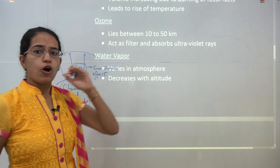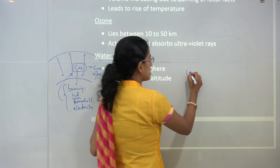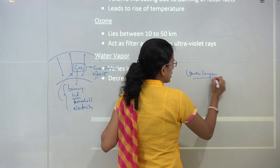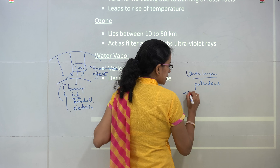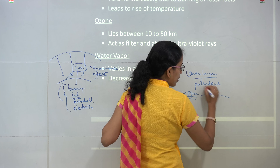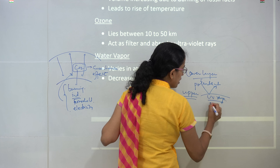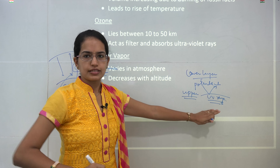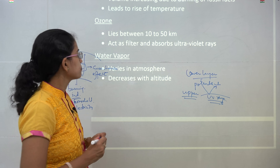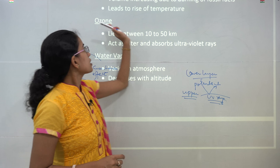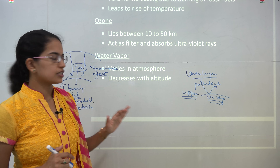Ozone is a very interesting gas because if it occurs in the lower layers of the atmosphere, it is considered a pollutant. However, if it occurs in the upper layer of the atmosphere, it protects the earth from harmful ultraviolet rays entering — these could cause skin cancers and so on. Therefore ozone is very important because it absorbs the harmful ultraviolet rays.